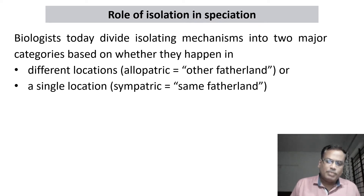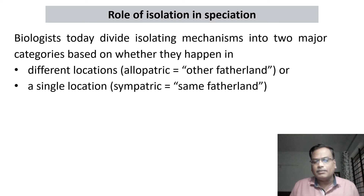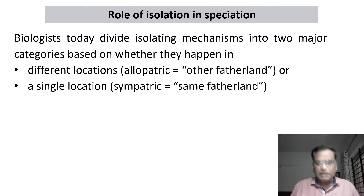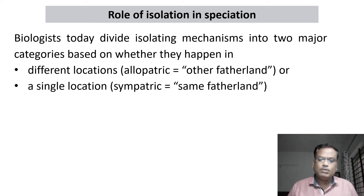In allopatric speciation, there is a barrier — normally a geographical barrier — which separates populations for a long time. When populations are separated for a long time, they will evolve into two different species.